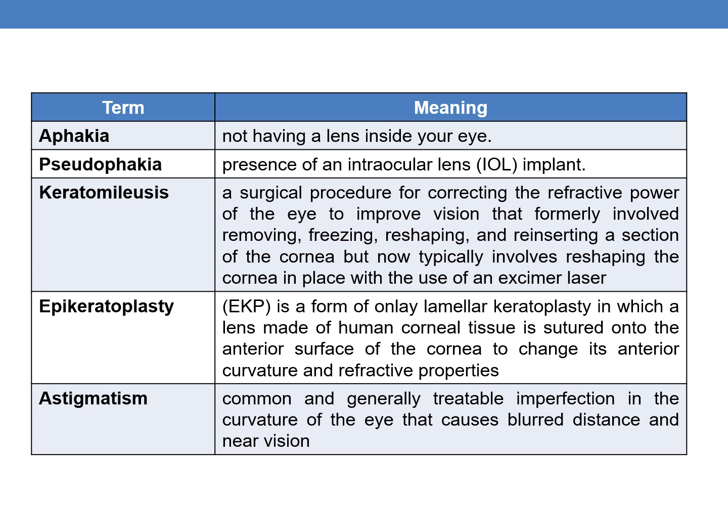The next term is astigmatism. It is a common and generally treatable imperfection in the curvature of the eye that causes blurred distance and near vision.